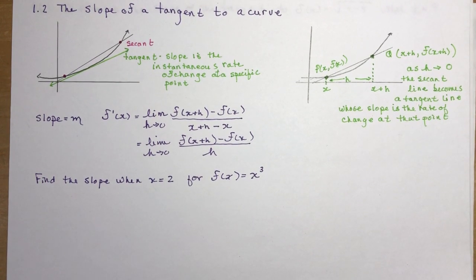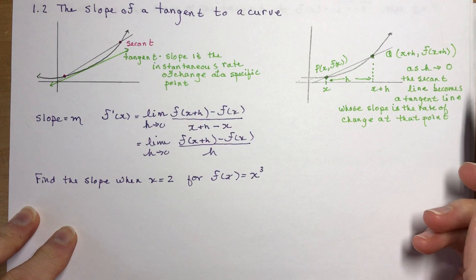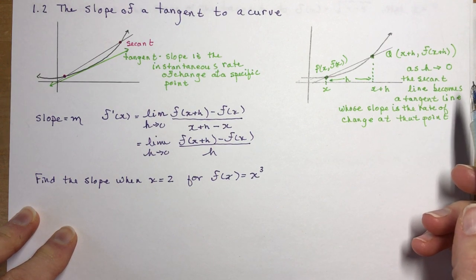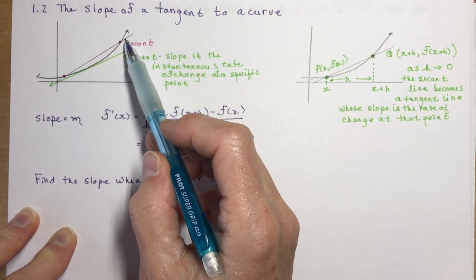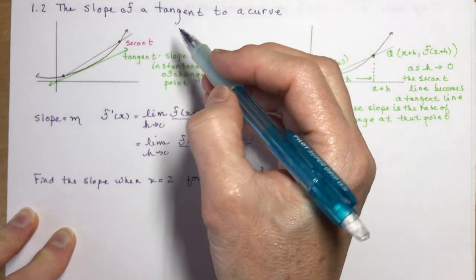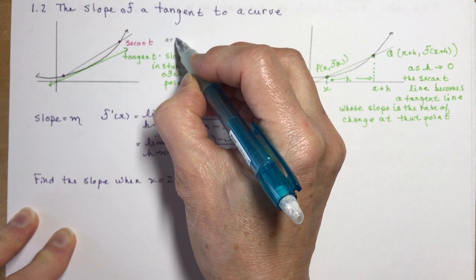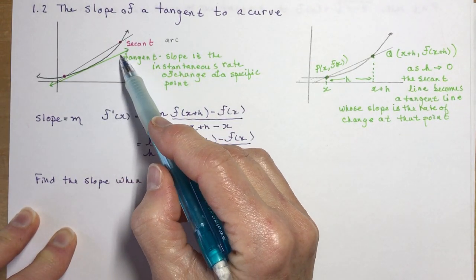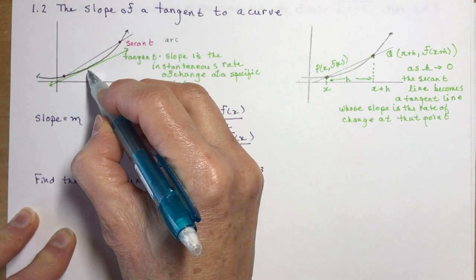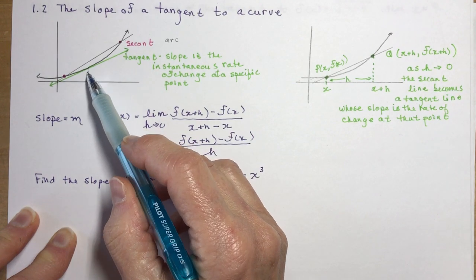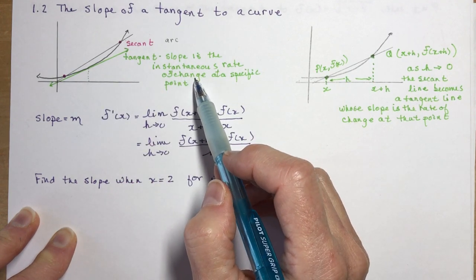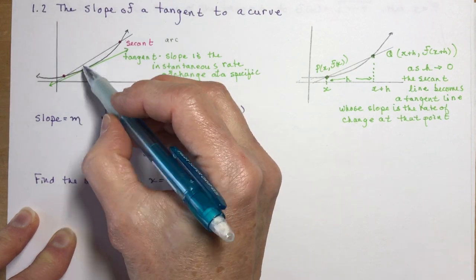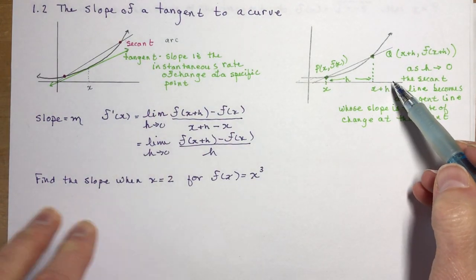Calculus and Vectors 1.2: the slope of a tangent to a curve. In this lesson we're going to find the exact rate of change at a certain point on a curve. This is a little different from Advanced Functions. We talk about a secant line, which is the slope between two points or the average rate of change, and the instantaneous rate of change is the slope of a tangent at a certain point — for example, at x equals 2.